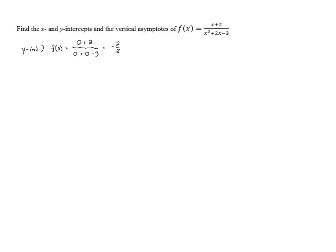This gives us negative two-thirds for our y-intercept. The y-intercept is always just the ratio of the constant terms because all of the other terms end up being 0.